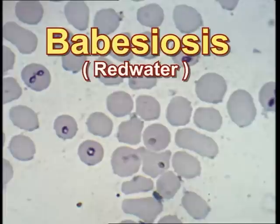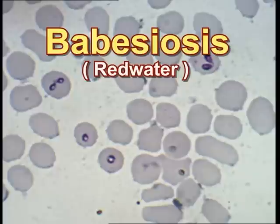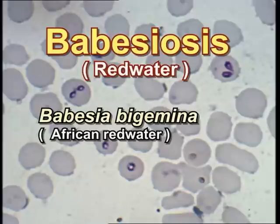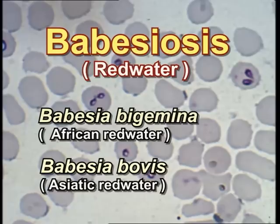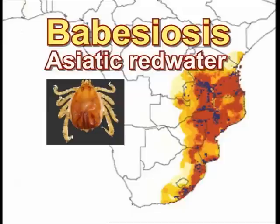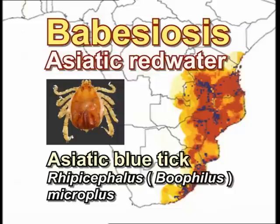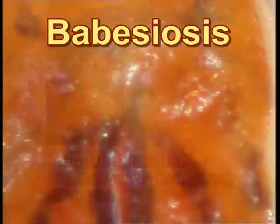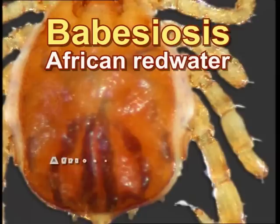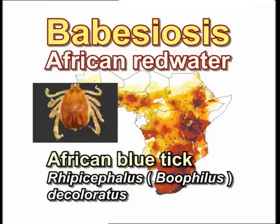Bovine babesiosis or redwater is a tick-borne disease caused by Babesia species that occur in the red blood cells of cattle. Two species are economically important in Africa: Babesia bigemina that causes African redwater, and Babesia bovis that causes Asiatic redwater. Asiatic redwater is restricted to areas where the Asiatic blue tick, Rhipicephalus microplus, is prevalent, usually the higher rainfall areas in the eastern parts of southern Africa. Babesia bigemina is principally transmitted by the common indigenous African blue tick, Rhipicephalus decoloratus, as well as by the Asiatic blue tick, and thus enjoys a much wider distribution.